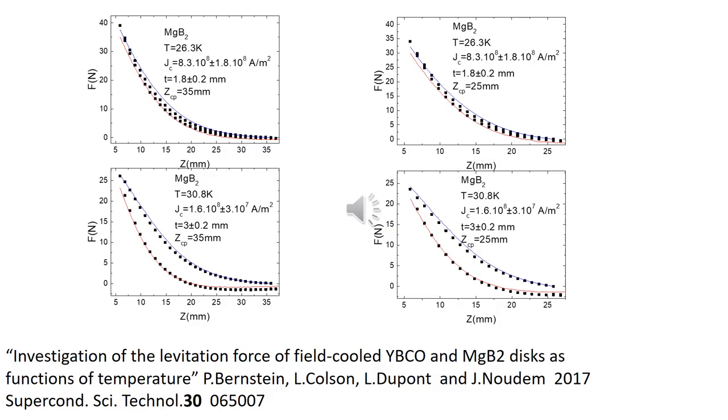This slide shows levitation force cycles measured on the MgB2 sample cooled down in the field of an inhomogeneous magnet at two different temperatures and two different cooling distances. At each temperature, the force cycles measured at the different cooling distances can be reproduced introducing the same critical current density and T values in the calculations.